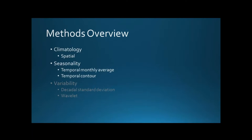Now that you have the relevant background information, I can run you through the methods I used to analyze the climate model outputs. I started by creating seasonal climatologies of all the different variables to look at the spatial distributions of their long-term averages, and then I looked at all the variables on temporal scales to get an idea of how they change over time and their seasonality. I also did some variability analysis looking at inter-annual variability, decadal seasonal variability, and tried a wavelet analysis, but none of these yielded any striking results so for the sake of time I had to cut that out of this presentation.